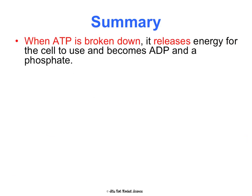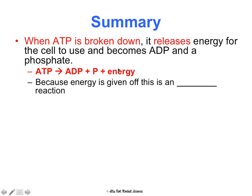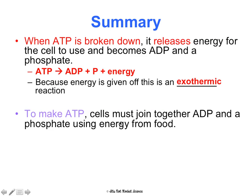Let's summarize. When ATP is broken down, it releases energy for the cell to use and becomes ADP plus a phosphate. As a chemical equation: ATP → ADP + phosphate + energy. Because energy is a product — it's being given off — this is an exothermic reaction. To make ATP, cells join ADP and a phosphate using energy from food broken down during cellular respiration: ADP + phosphate + energy → ATP.